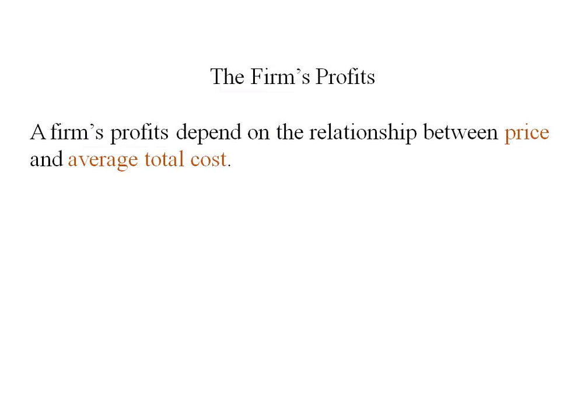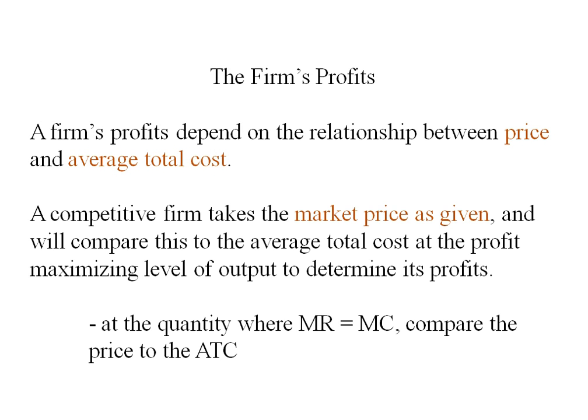A firm's profit is going to depend on the relationship between the price and its average total cost. So a competitive firm is taking the market price as given, and they're going to compare this to their average total cost at the profit maximizing level of output.